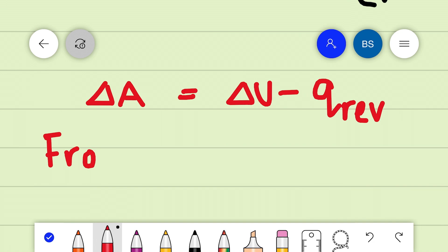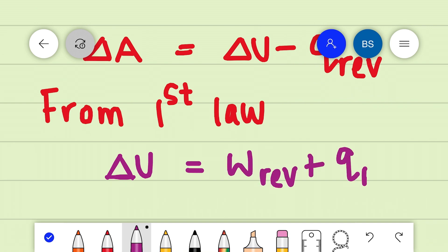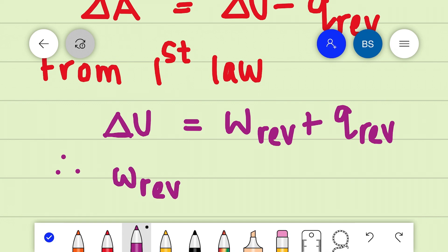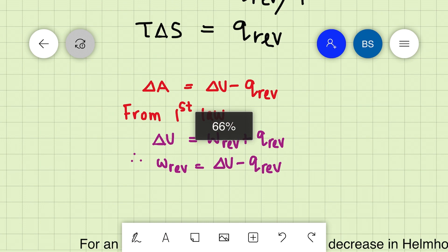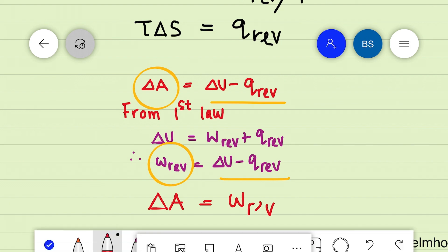According to the first law of thermodynamics, we know delta U equals w plus q. From here we get w equals delta U minus q reversible. And we have delta A equals delta U minus q reversible. When we substitute, we get delta A equals delta U minus q reversible.